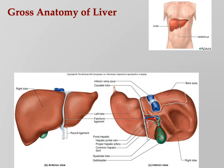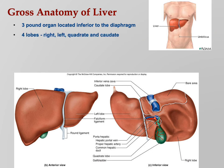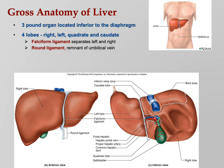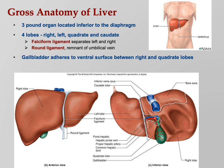Looking at the liver — I already talked about this in the lab PowerPoint so we've seen a lot of this already. It's a three-pound organ right underneath the diaphragm with four lobes: left, right, quadrate, and caudate. The left lobe is much smaller than the right. The falciform ligament separates left and right, and at the bottom of the falciform ligament is the round ligament, which is a remnant of the umbilical vein. The gallbladder adheres to the surface between the right and quadrate lobes.